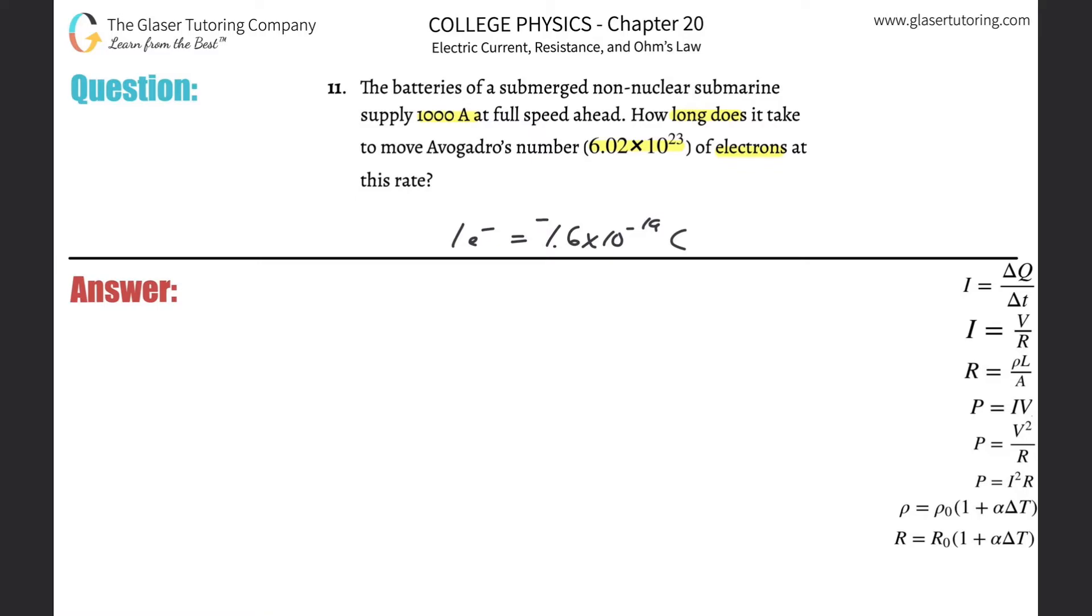So you can leave out that negative sign. If I know there are 6.02 times 10 to the 23rd electrons flowing, and I know that each single electron has a charge value of 1.6 times 10 to the minus 19 coulombs, I can just do a multiplication to find the number of coulombs.